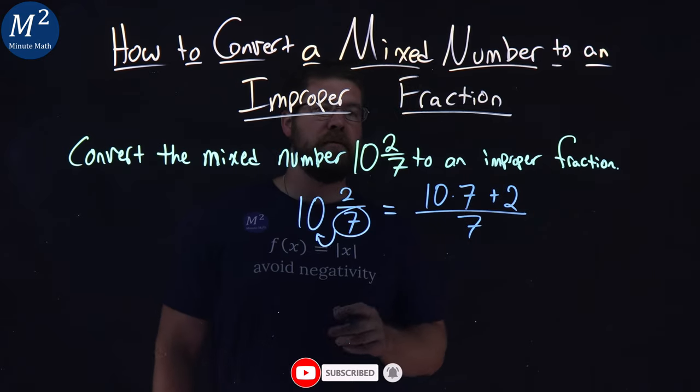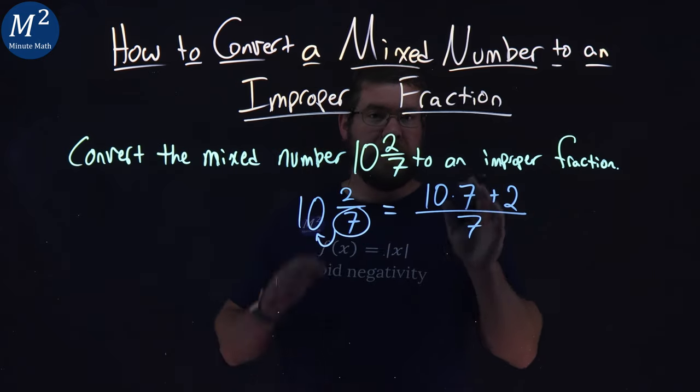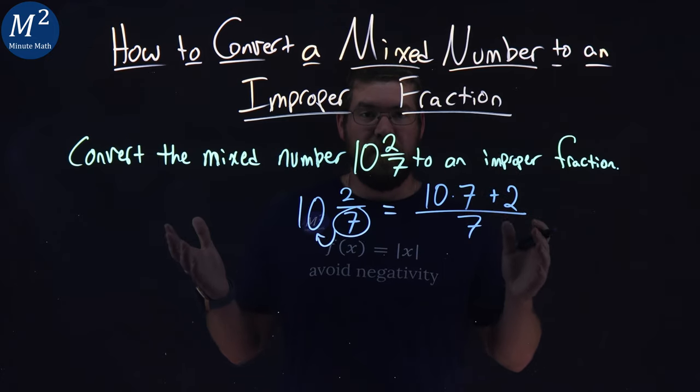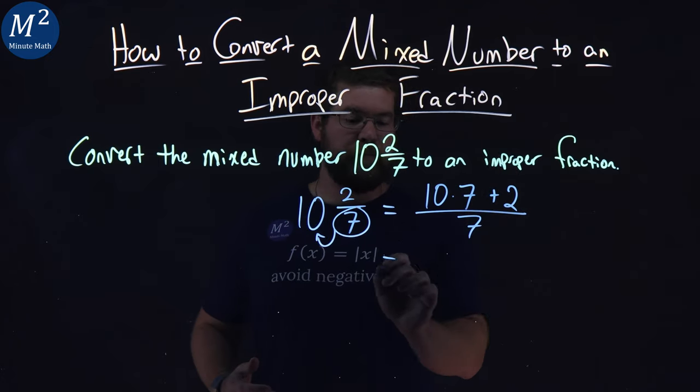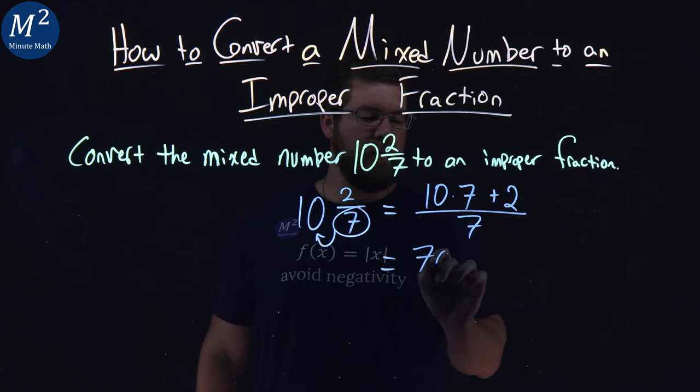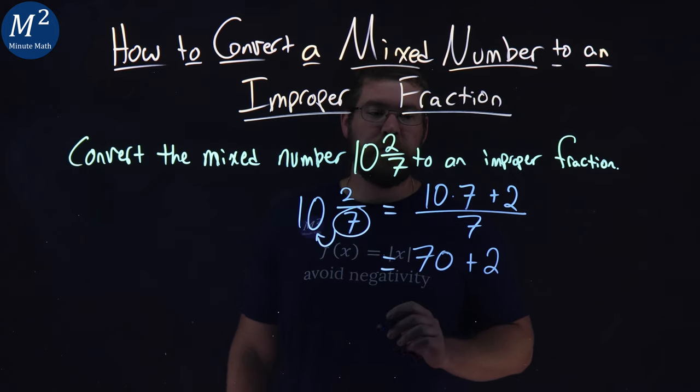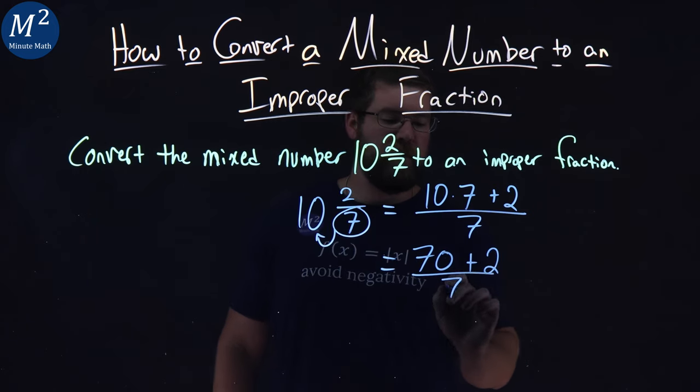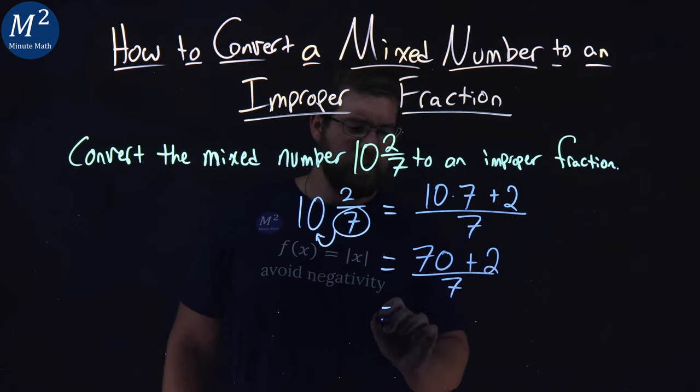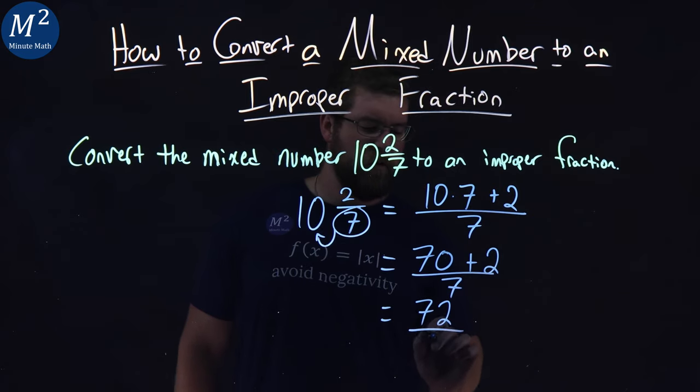So 10 times 7 plus 2, all over 7, is our setup. Now we need to simplify. 10 times 7 is 70, plus 2, over 7. 70 plus 2 is 72 over 7, and there we have it.